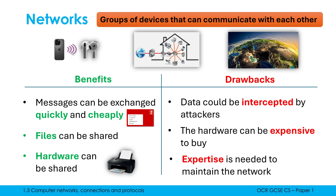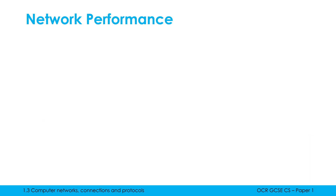Those are some key points when we evaluate networks overall. However, all of us use networks, so this is a little bit of a pointless exercise. What is maybe more interesting is to evaluate network performance once it's up and running. So what makes the network perform well? What makes it perform badly? Performance is really about how quick the network feels. Now there isn't just one measure for network performance — there are quite a few different performance measures.